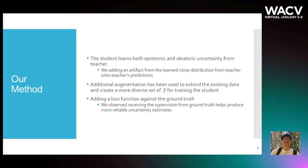Moreover, we add additional augmentation to create a more diverse set of y-hat for training the student. We also found that adding the teacher's loss function against the ground truth as an auxiliary loss helped the student learn to predict more reliable uncertainty estimates.